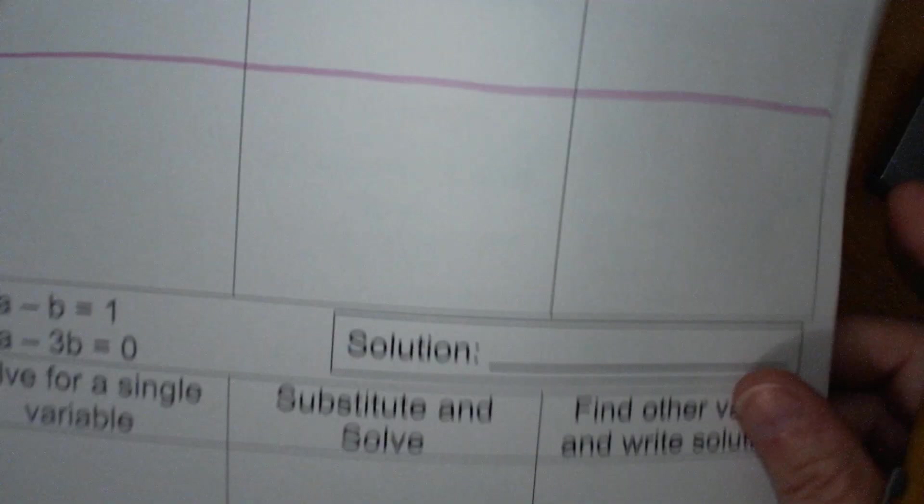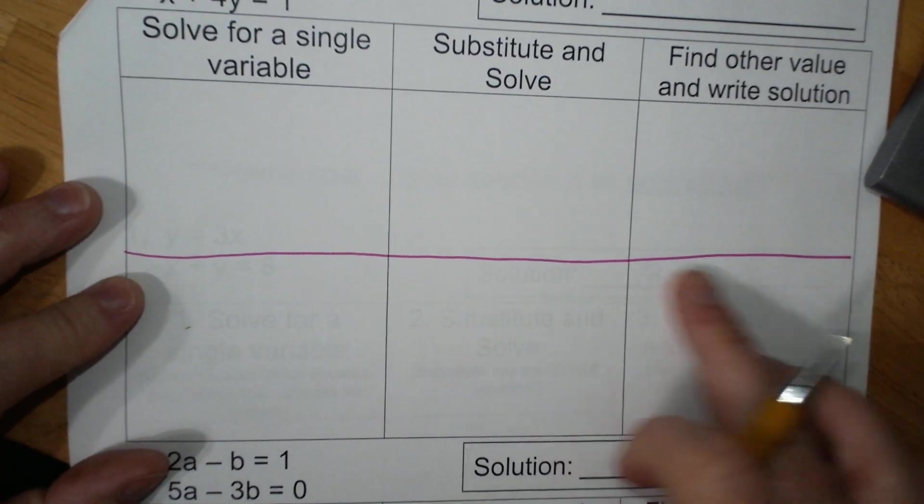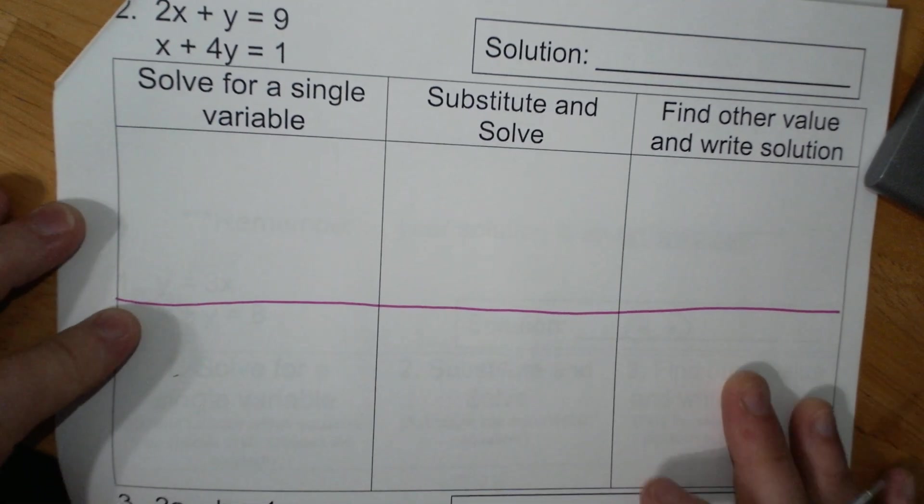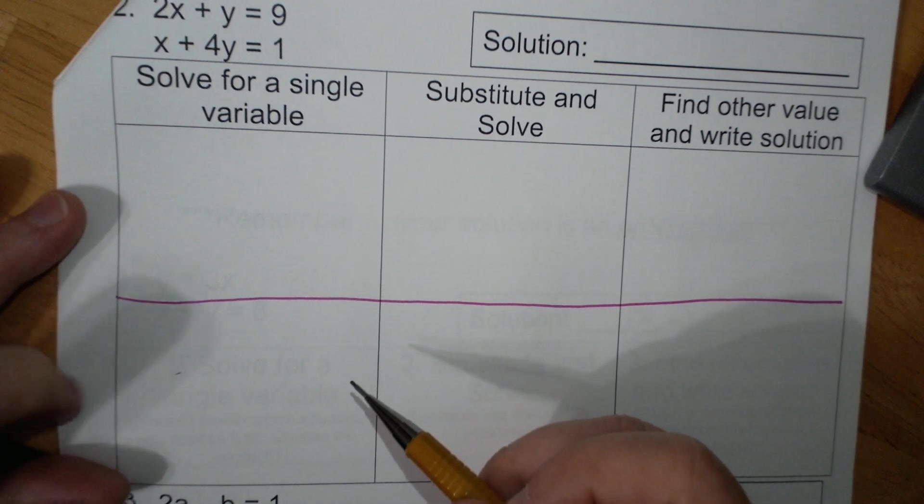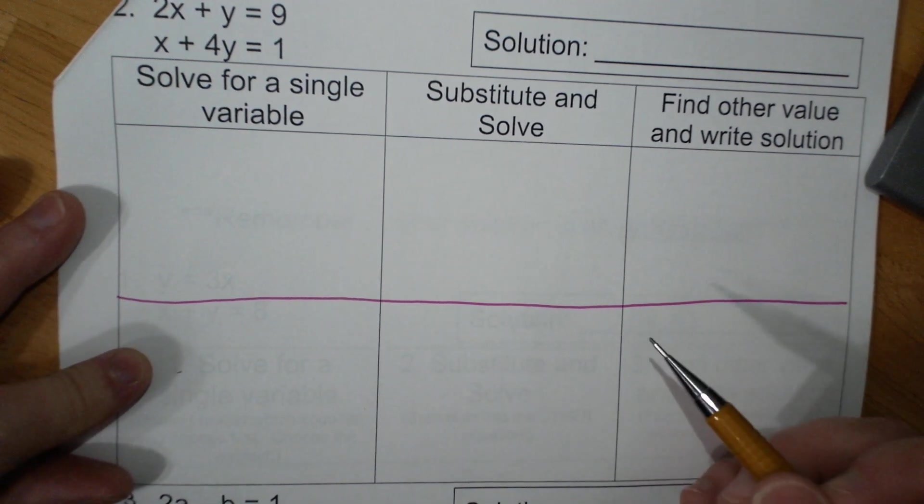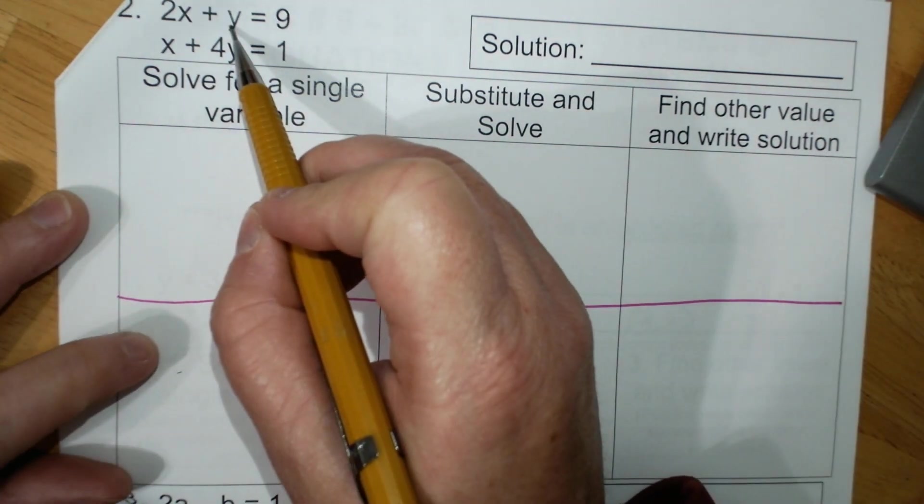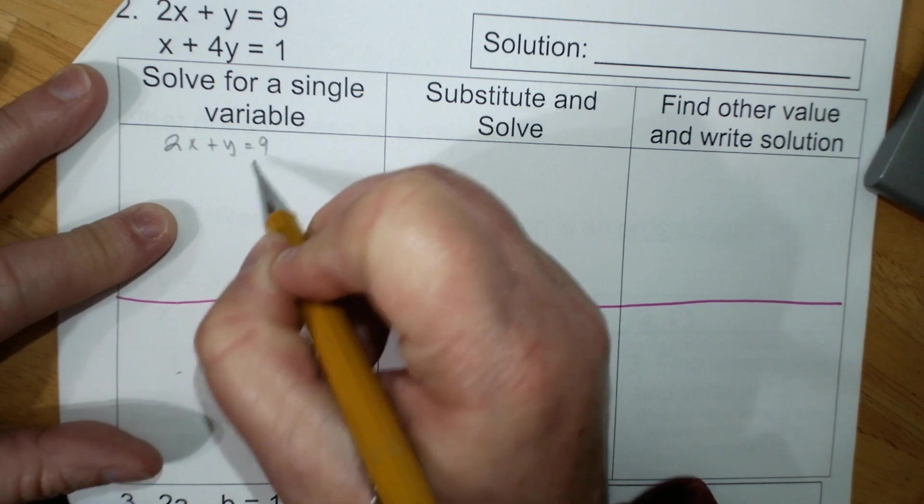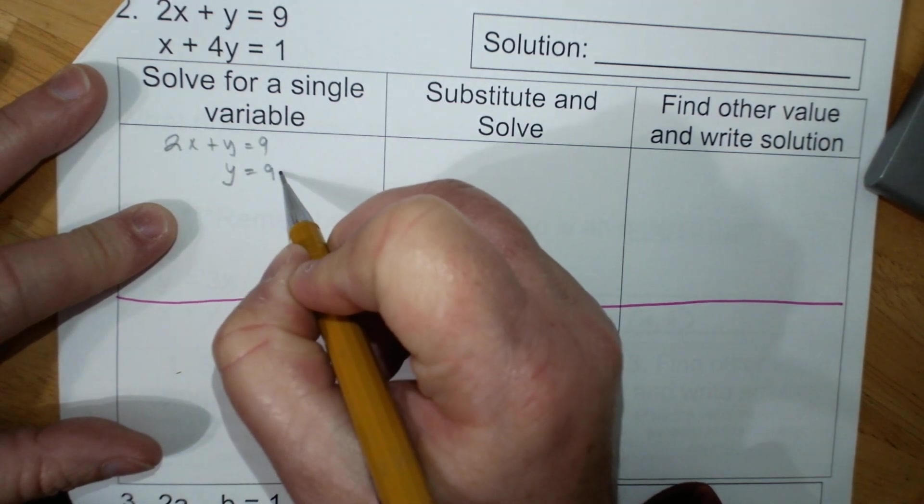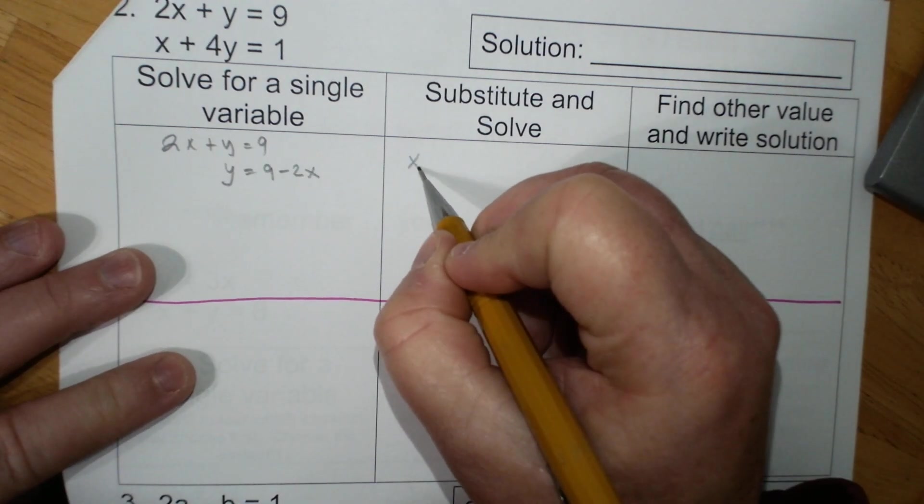It's the same process over and over. I have this red line because I'm going to do this same problem two times, and I should get the same answer. It says solve for a variable. So I have a y. I'm going to do 2x plus y equals 9. Y equals 9 minus 2x. I then go to the other equation.